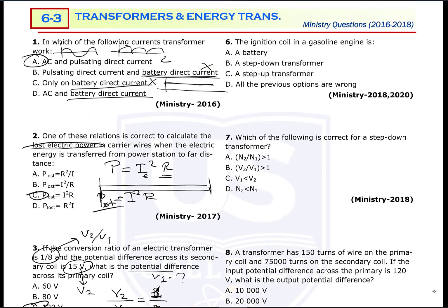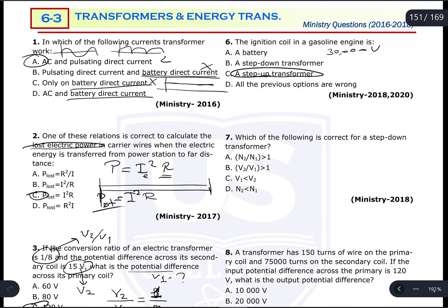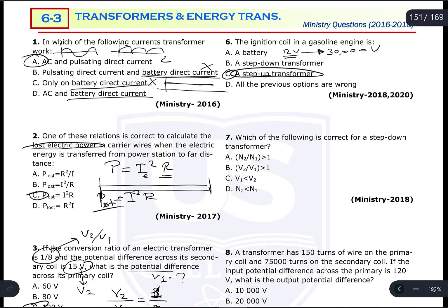Question 6: The ignition coil in a gasoline engine is a step-up transformer. The ignition coil needs a very large potential difference — almost 30,000 volts — to start ignition inside the engine, but the car battery is only 12 volts. So the ignition coil converts 12 volts to approximately 25,000–30,000 volts, which is why it must use a step-up transformer.